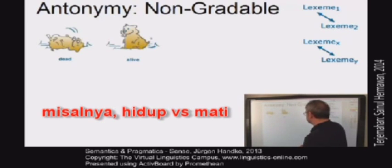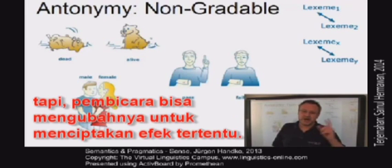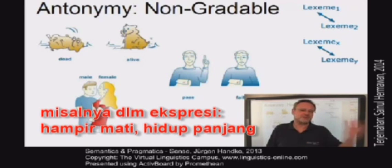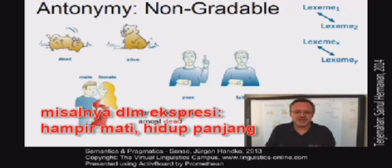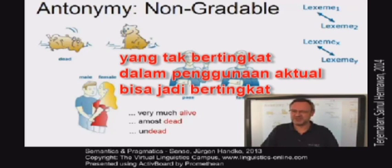Each of the following pairs exhibits this either-or relationship. For example, dead versus alive, or male and female, or pass and fail. However, speakers can always alter these two-term classifications to create special effects. Take the dead-alive dichotomy. You can say something like, he's very much alive. Or you can say, after the match, we were almost dead. And look at this sentence: Zombies are neither dead nor alive. They are undead. Well, that's actual language use.